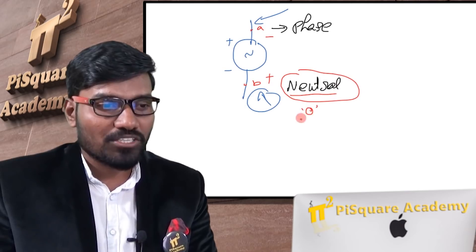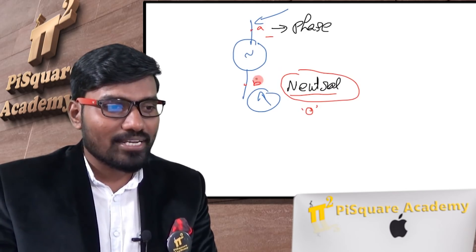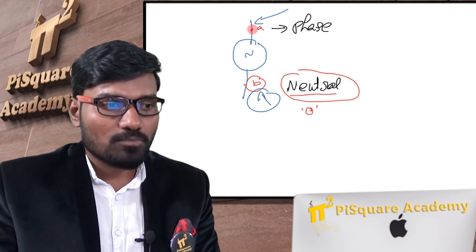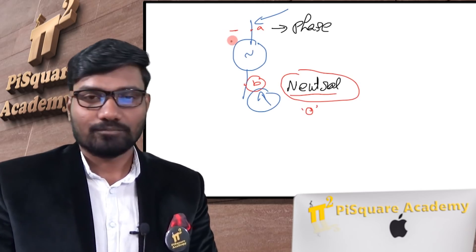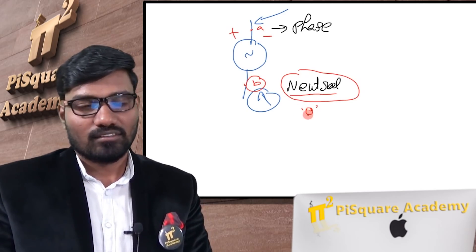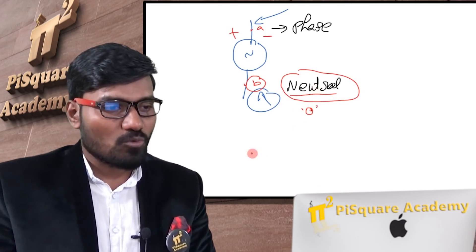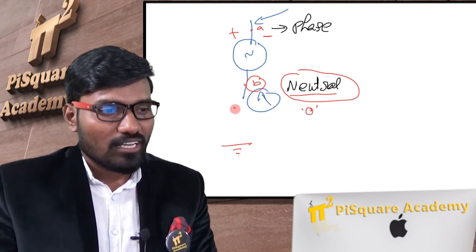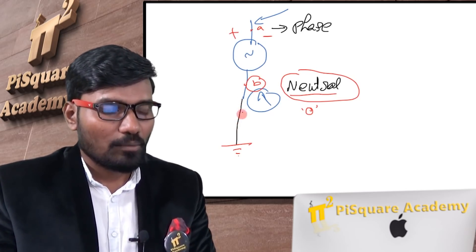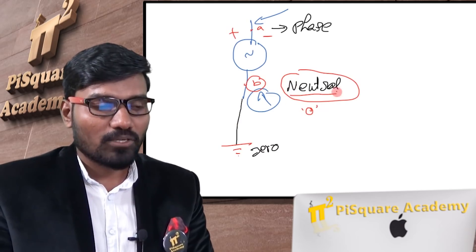Point B is always at zero potential. With respect to point B, the phase polarity will be positive in one half cycle and negative in another, but this neutral potential is always zero. Who is making sure that this potential is zero? That's what the ground does. By connecting this neutral point to the ground — which has zero potential — the neutral potential is maintained at zero volts.